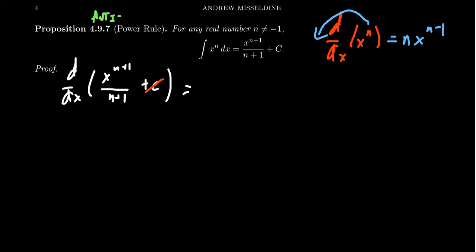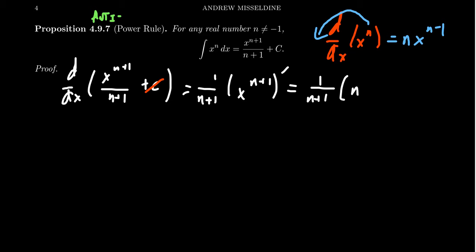By the power rule, we bring the exponent down — n plus one. Constant multiples can be brought out of the derivative process, so we get the one over n plus one out front, then bring down the power of n plus one, and the exponent lowers by one: n plus one minus one. Simplifying, n plus one divided by n plus one goes to one, and n plus one minus one goes away, and we're left with just x to the n.